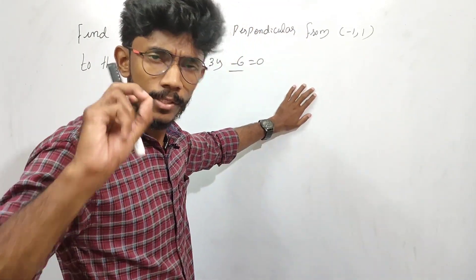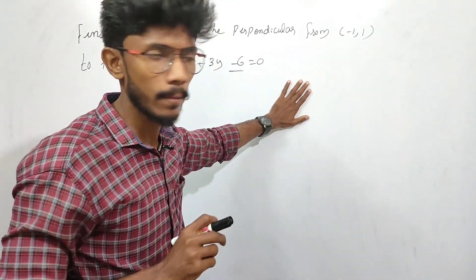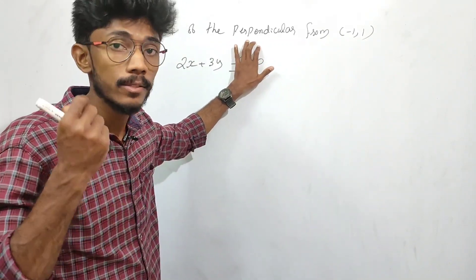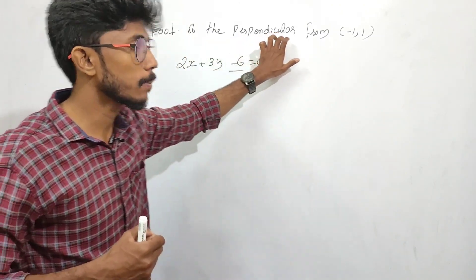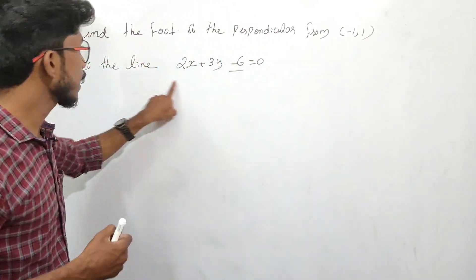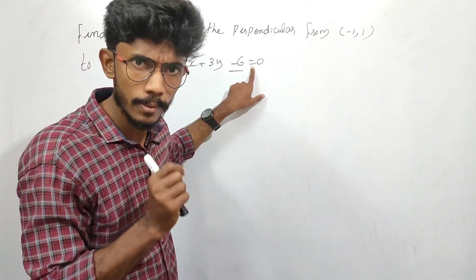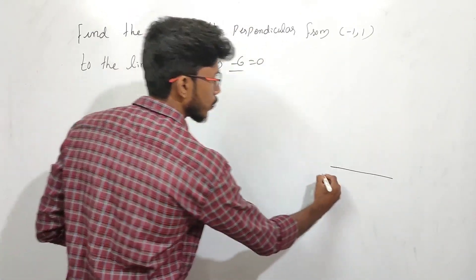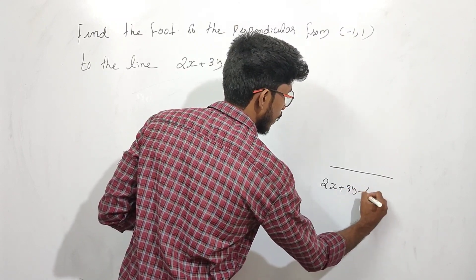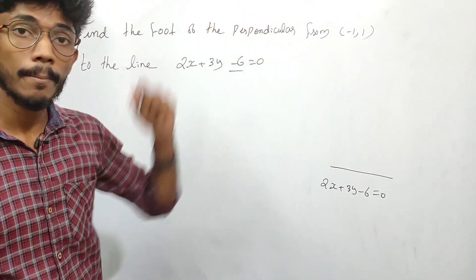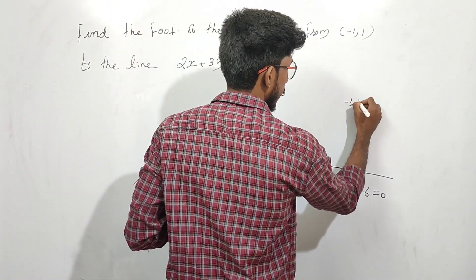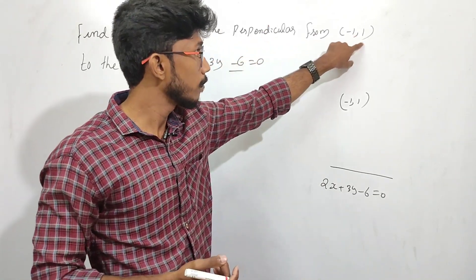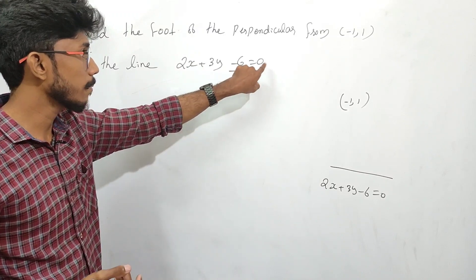Straight lines chapter in the exam. We'll discuss a chance — find the foot of the perpendicular, very important for the exam. Find the foot of the perpendicular from (-1, 1) to the line 2x + 3y - 6 = 0. This line is the equation. The point is (-1, 1).